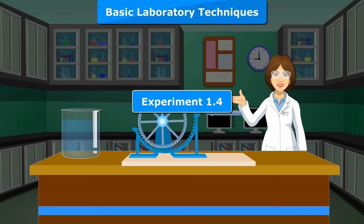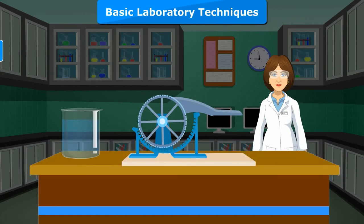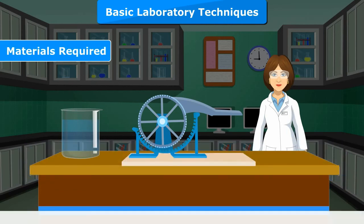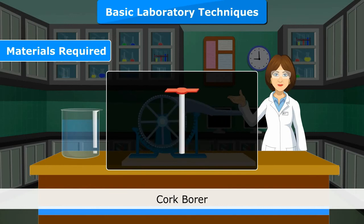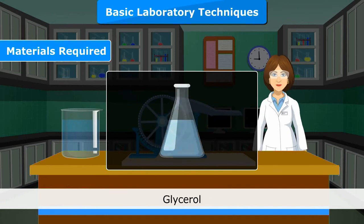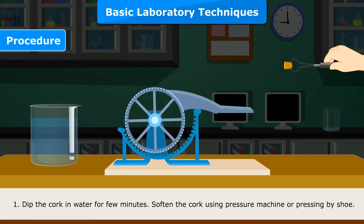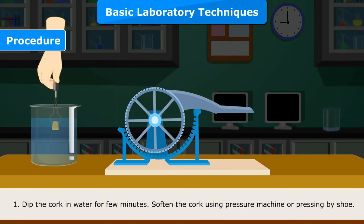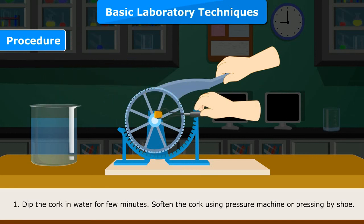Experiment 1.4. Objective: To bore a hole in the cork. Materials required: cork, cork pressure machine, cork borer, glycerol and flask. Procedure 1: Dip the cork in water for a few minutes. 2. Soften the cork using a pressure machine or by pressing with a shoe.